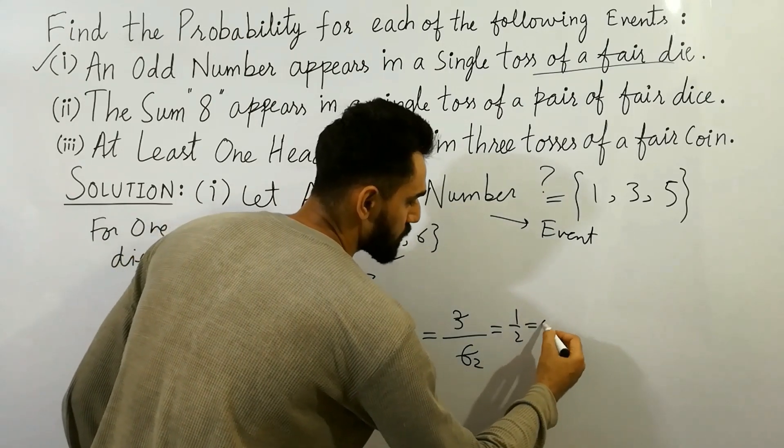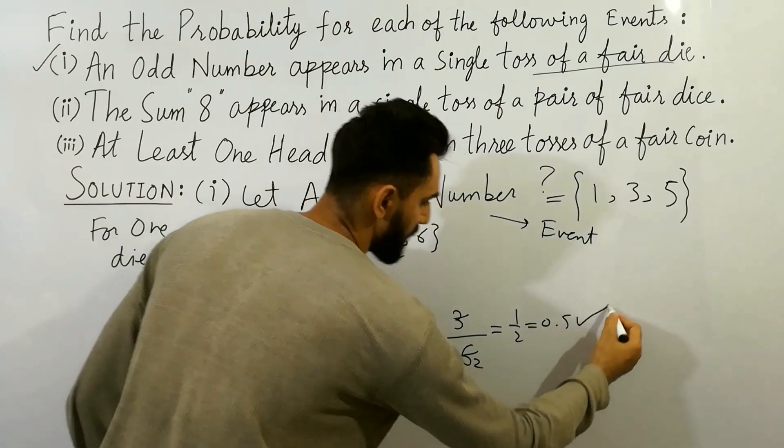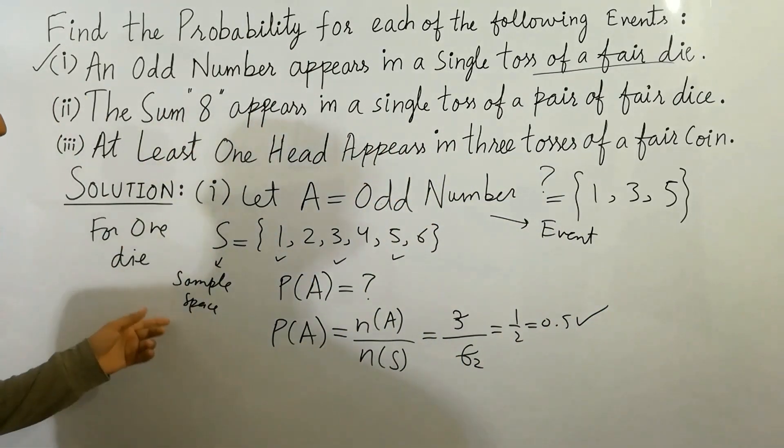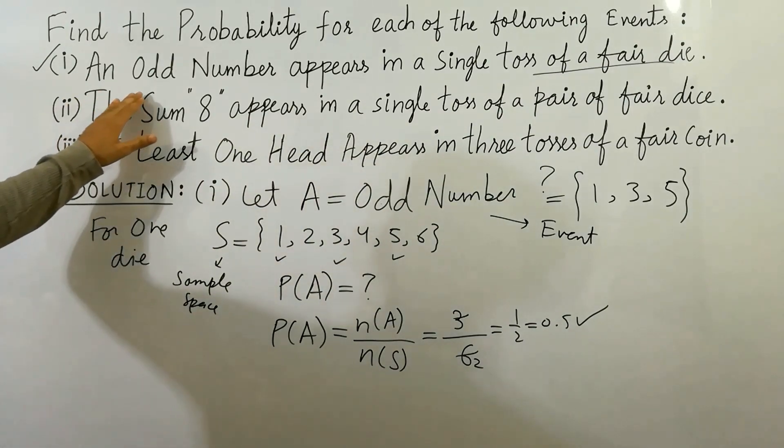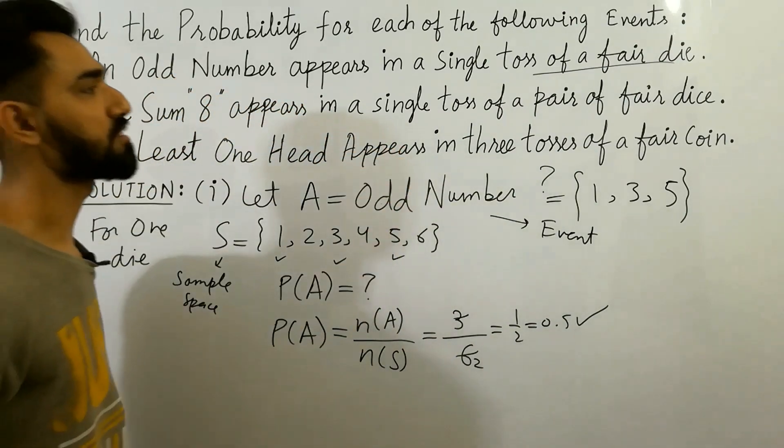We will get one by two is equal to 0.5. So that's the probability of A if an odd number appears in a single toss of a fair die.